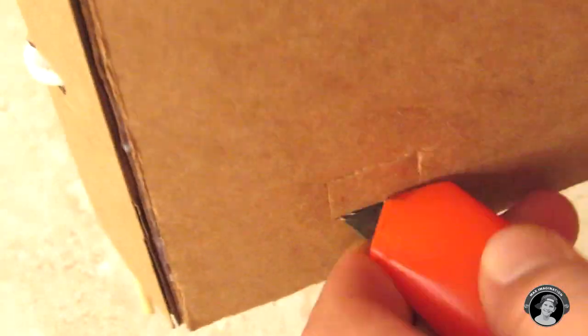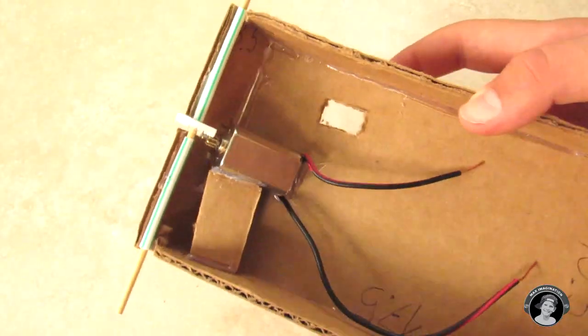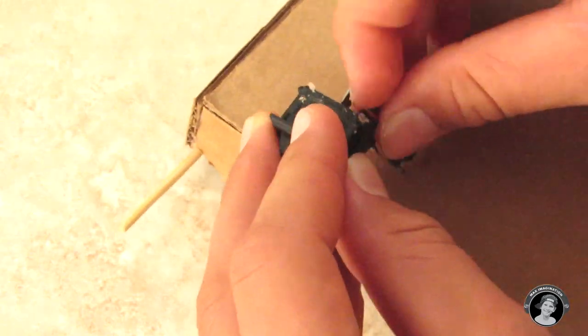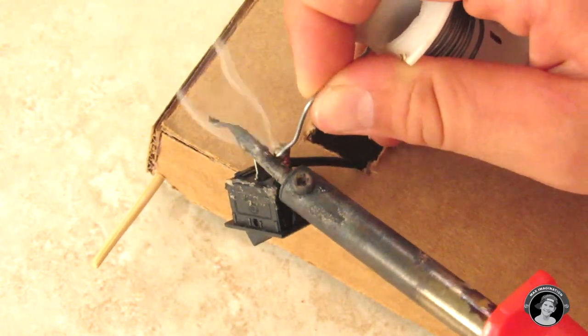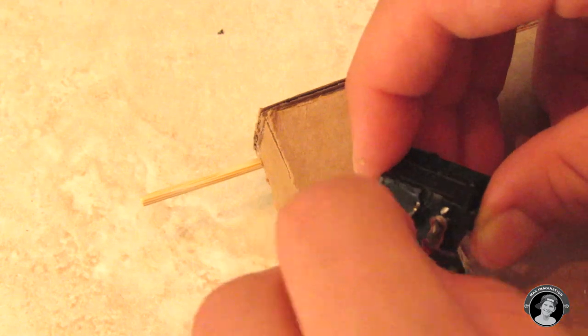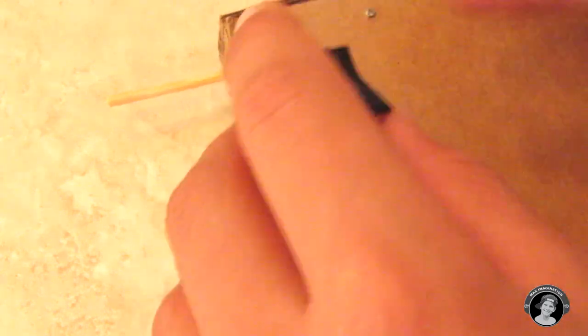Then you're going to cut out a little rectangle for your switch. Pull one of the wires through that went from the motor, wire it to one of the ends of the switch - it doesn't really matter, it'll still work. Then wire a shorter wire to your switch and then also pull it through to the other side.